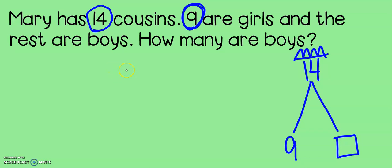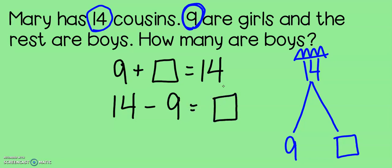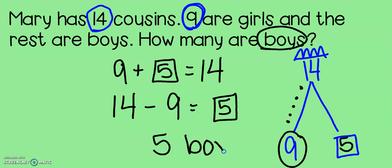So, let's write an equation. We could do two different equations. We could say nine plus something equals fourteen, or we could start with our king of the mountain, our sum, and we could subtract nine to find our missing number. I'm going to count up in this problem: nine, ten, eleven, twelve, thirteen, fourteen. Let's see how many I went up: one, two, three, four, five. That means that she has five boy cousins. So, she has nine girl cousins and five boy cousins.